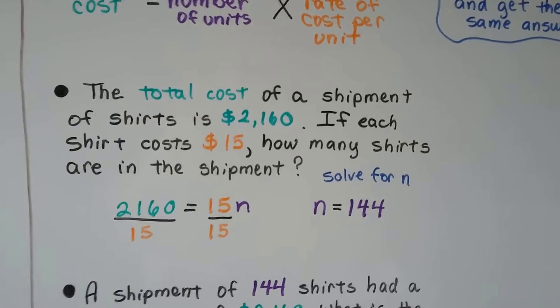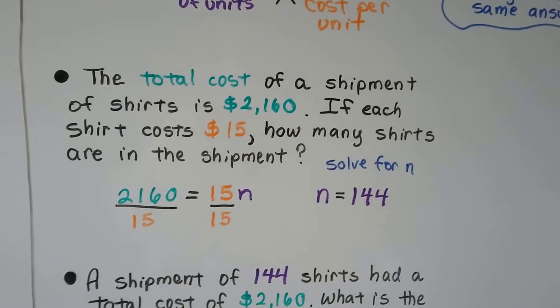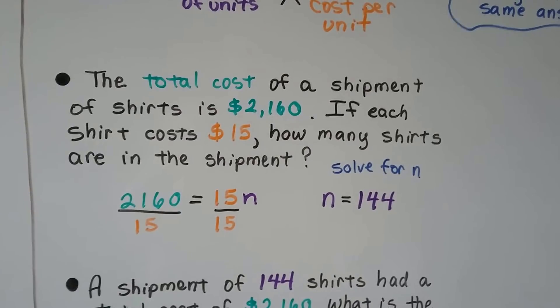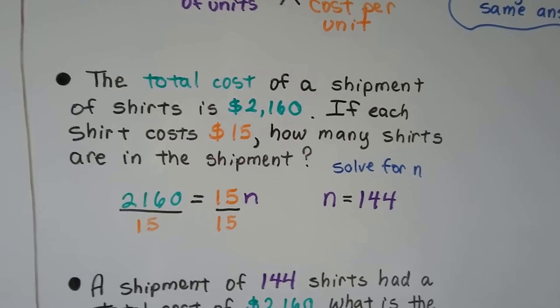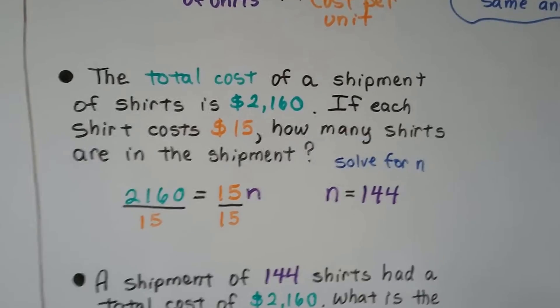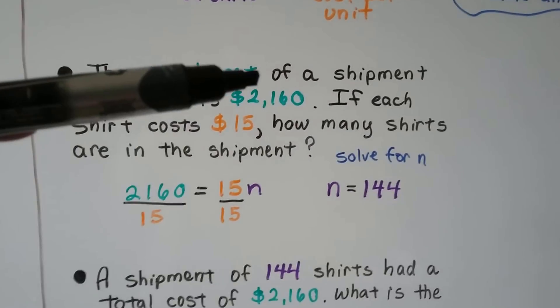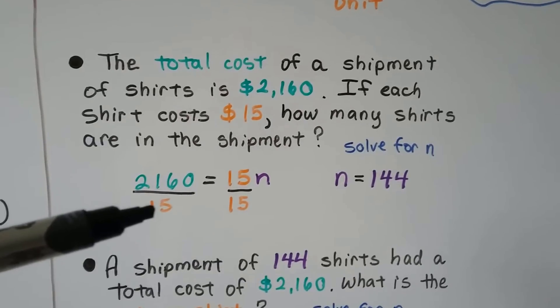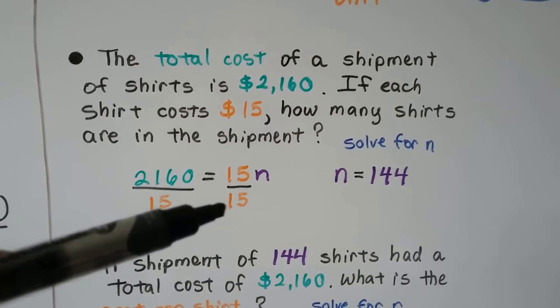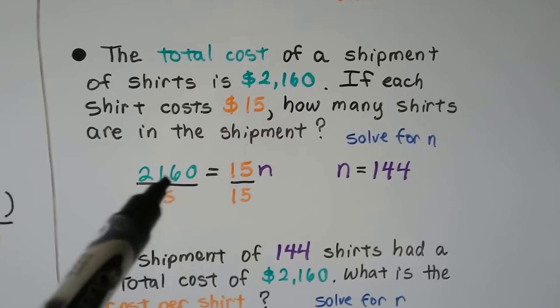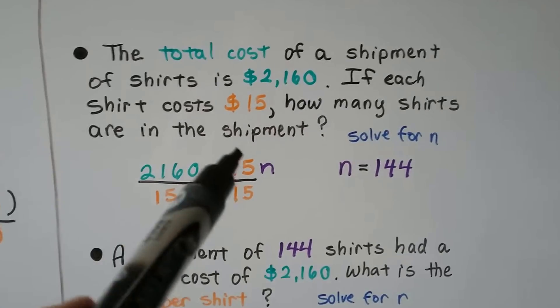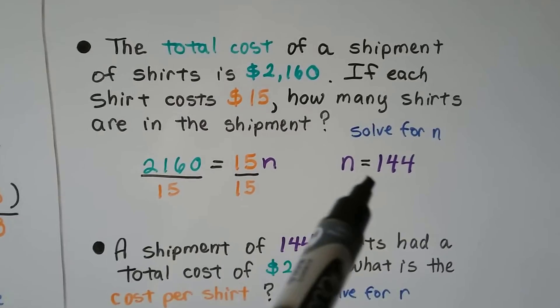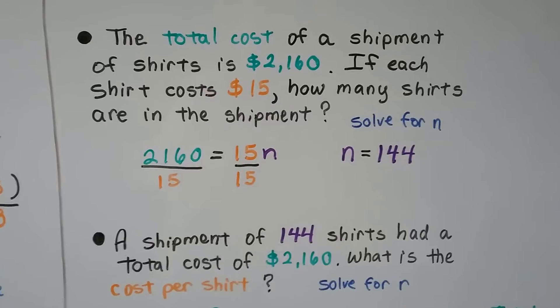So the total cost of a shipment of shirts is $2,160. If each shirt costs $15, how many shirts are in the shipment? You might be able to just say, I know how to do this, you just divide. Exactly. You just divide. You divide the 2,160, the total cost, by the rate of cost per unit, the 15. When we divide both sides of this equation by the 15, that turns into a giant one, so we just have an n here. And we do the division, and we get 144 is equal to n.